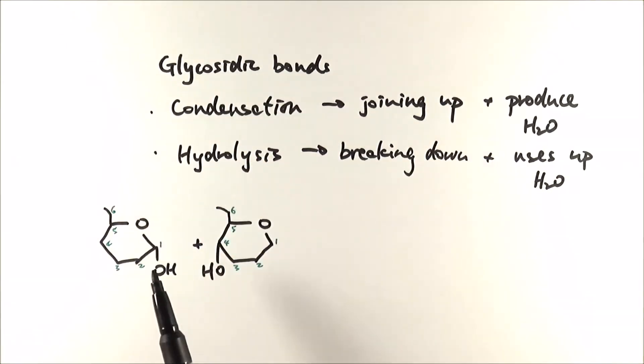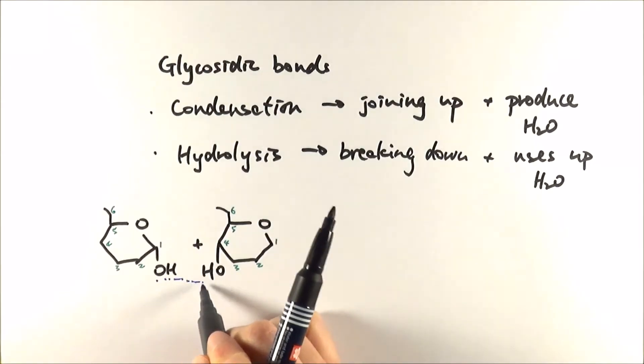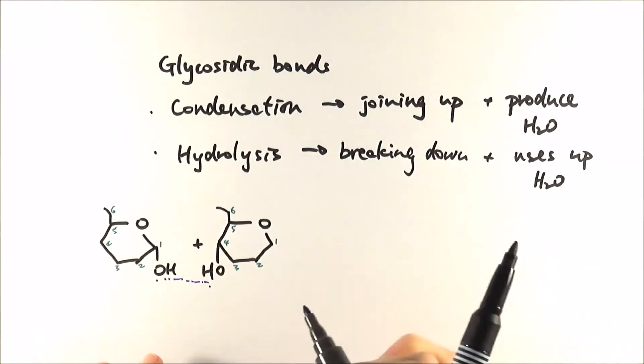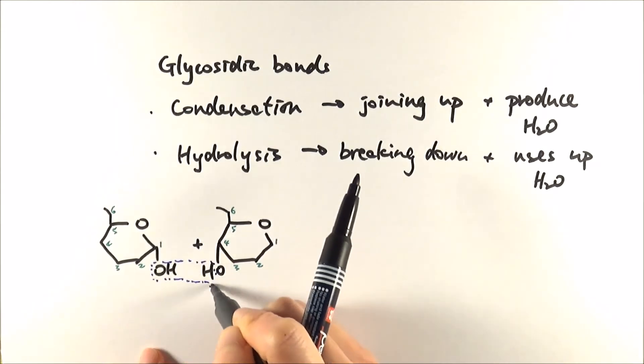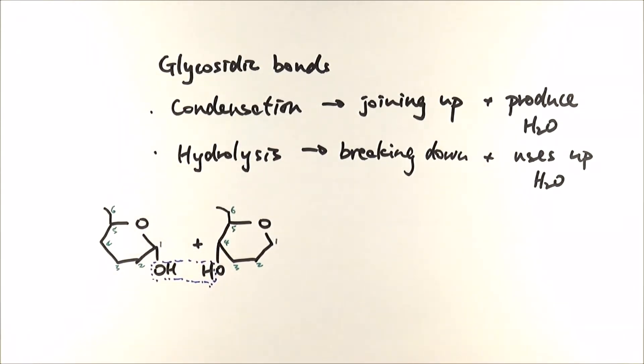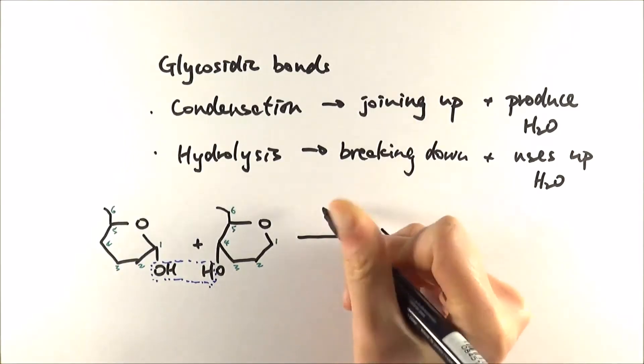And I only draw the hydroxyl groups that are involved in this particular case. So the hydroxyl group between C1 and C4 they come close together and they sort of react with one another, and what happens is one hydroxyl group will almost steal the hydrogen from the other hydroxyl group and then they go off and form the water molecule. So this is what happens in this case and this is what we mean by condensation.